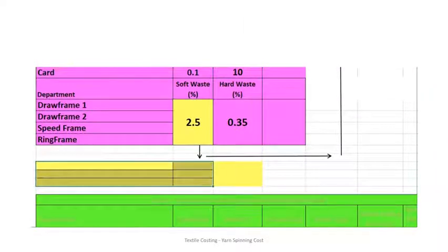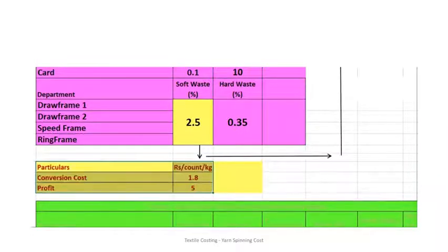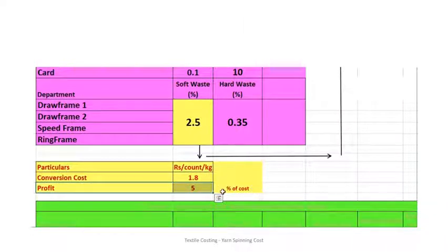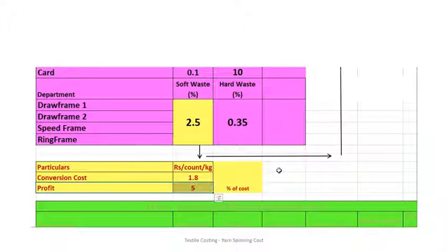Next are the cost particulars. The conversion cost is 1.8 rupees per count per kg, and profit is 5%. If profit is given as a percentage on cost, it is treated as percentage on cost. If it is mentioned as percentage on selling price, it has to be taken as a percentage of selling price. If nothing is given, it is to be assumed as percentage of cost.